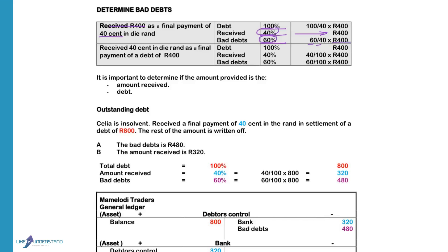Receive 40 cents in the Rand as a final payment of a debt of 400. In the second example they give us the debt, where in the first example they gave us the received amount. The debt is 100%, received 40%, bad debts will be 60%. The amount given is the debt, so the debt is 100% equals 400 Rand. The bad debts will be 60% of 400 Rand. It is very important to determine whether the amount received or the total debt is given before you do the calculation.